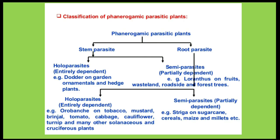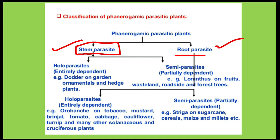Phanerogamic plant parasites are divided into 2 parts: first are stem parasites, and second are root parasites. Stem parasites infect the stem of another plant and take nutrition from there. Root parasites infect the root of the host plant and take nutrition from the root.